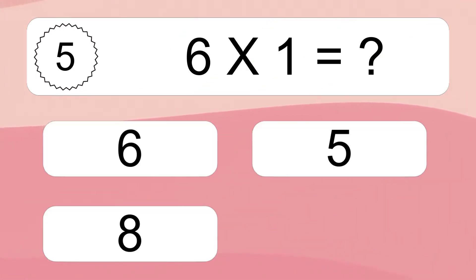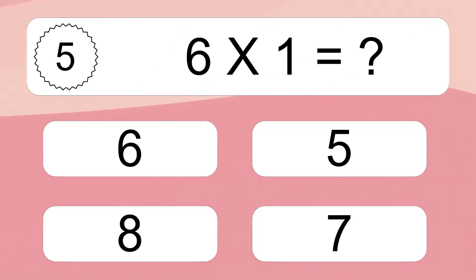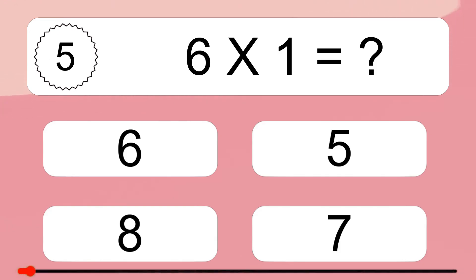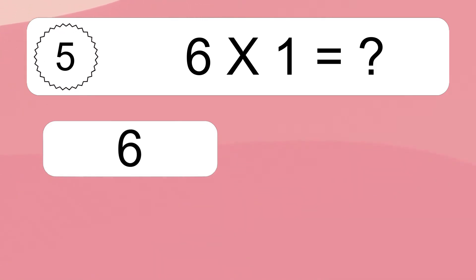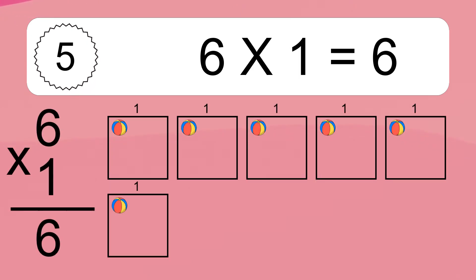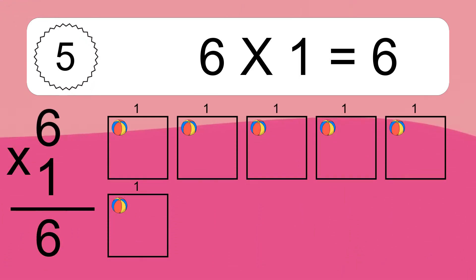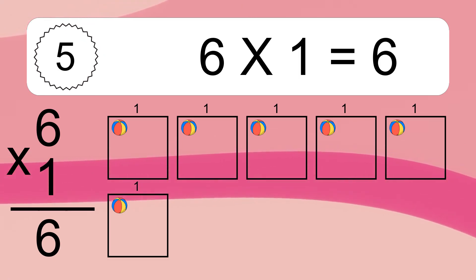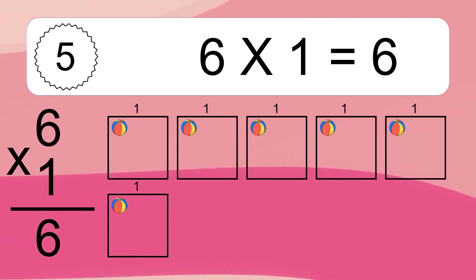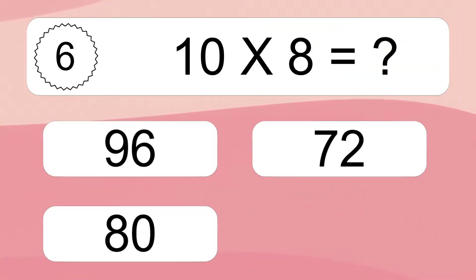6 times 1 equals 6. We have 6 boxes, and each box has 1 colorful ball inside. If you count all the balls in all the boxes together, you will have 6 times 1 balls. This equals 6 balls.